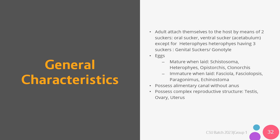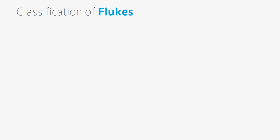The eggs that are mature are laid by Schistosoma, Heterophyes, Opisthorchis, and Clonorchis, while immature eggs are laid by Fasciola, Fasciolopsis, Paragonimus, and Echinostoma. These organisms possess an alimentary canal without an anus, and they also possess complex reproductive structures such as the testis, ovary, and the uterus. The flukes are classified according to the location preferred by the adult worm in the definitive host. There are usually four locations that the flukes invade: the blood vessels, the intestines, the liver, and the lungs.